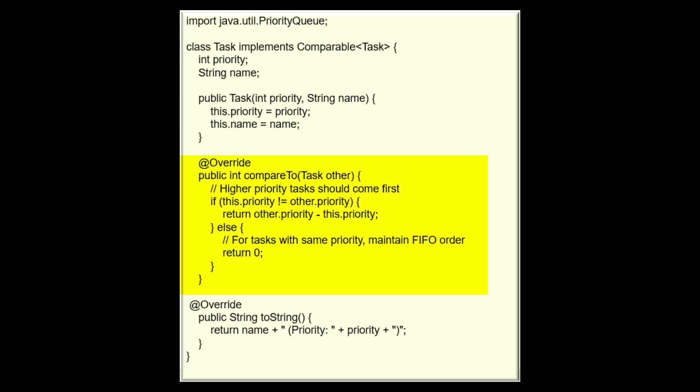This part of the code is an implementation of the compareTo method from the Comparable interface, which was mentioned earlier when we were discussing the implements Comparable<Task> line. Overall, this compareTo method is used to define the natural ordering of Task objects based on their priorities. Higher priority tasks are considered less than lower priority tasks, and within the tasks of the same priority, the order is maintained based on when they were added.